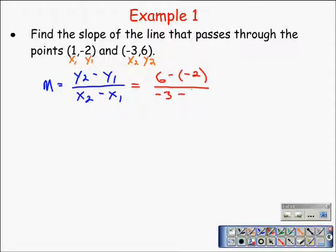Now at this point you could use your calculator to do this arithmetic. I don't need a calculator. 6 take away negative 2 gives me 8, and negative 3 take away negative 1 gives me negative 4. Now this fraction 8 over negative 4 simplifies to negative 2. So the slope between these two lines is negative 2.